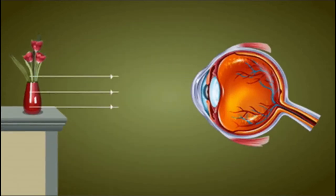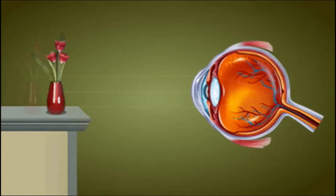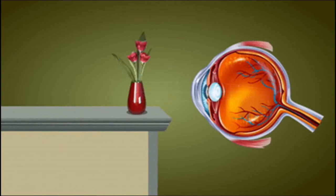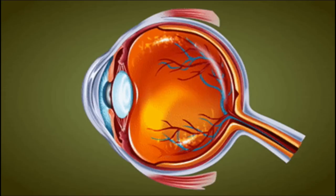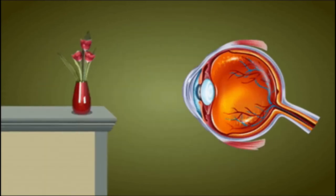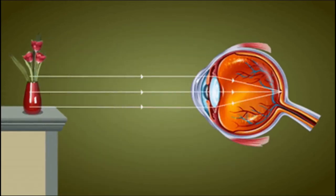The eye lens can form an image of an object on the retina — it converges light coming from near and far objects onto the retina. This automatic adjustment of the eye lens, or managing the distance between object and lens, is known as accommodation.